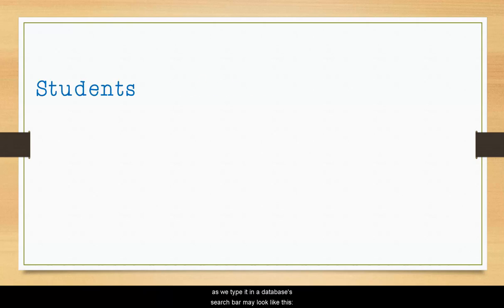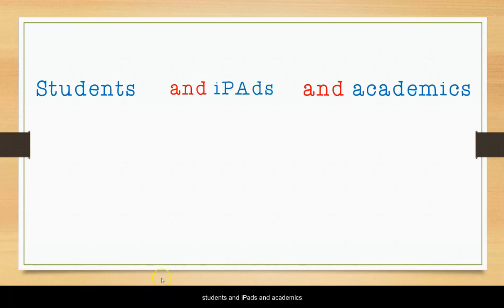When you search in a library database, you will want to enter just the most important terms. Since we want articles and resources that speak to all three of these ideas, our search, as we type it in a database's search bar, may look like this: students and iPads and academics.